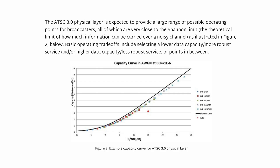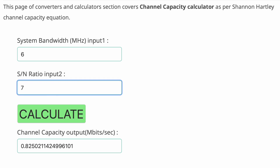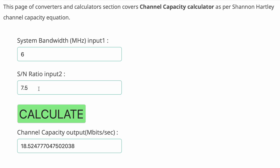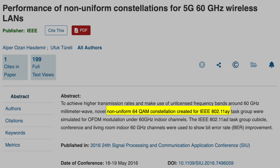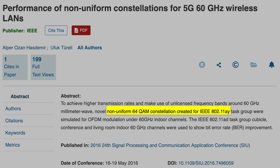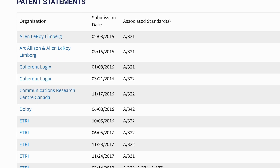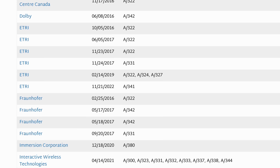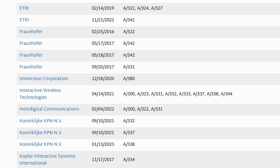Thus, this technology shrunk the gap between what could be sent with modulation techniques and what could be sent theoretically according to the Shannon-Hartley theorem. This innovative technology, which has barely made its way into Wi-Fi, is a part of the suite of technology standards that ATSC 3.0 is made up of.